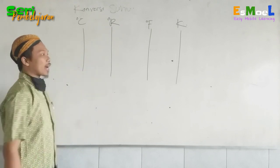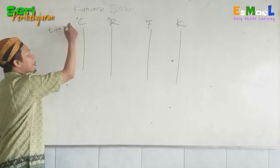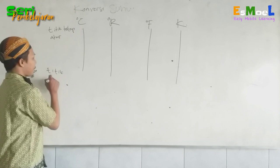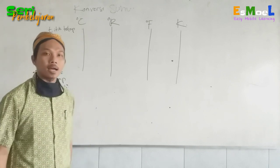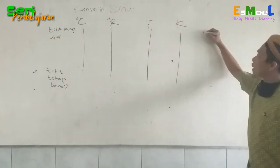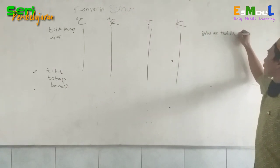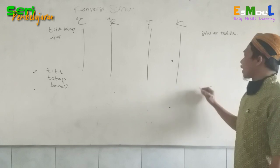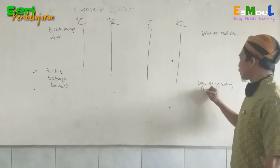Di sini nanti ada titik tetap atas dan titik tetap bawah. Titik tetap atas yaitu suhu saat air mendidih pada tekanan satu ATM. Terus di titik tetap bawah ini suhu es yang sedang mencair.